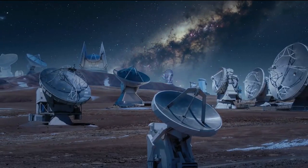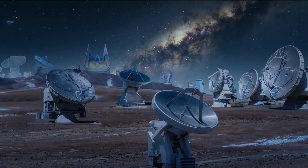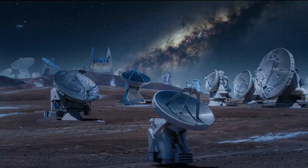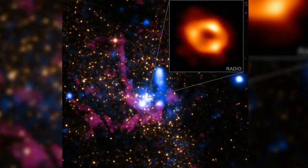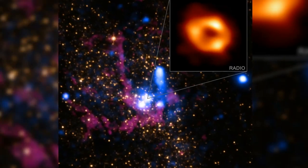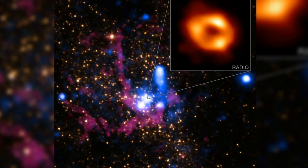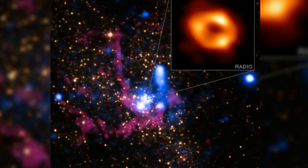The first image of a black hole was captured in 2019 by the Event Horizon Telescope Collaboration. The striking photo of the black hole at the center of the M87 galaxy, 55 million light years from Earth, thrilled scientists around the world.